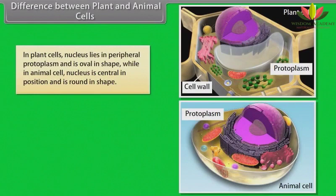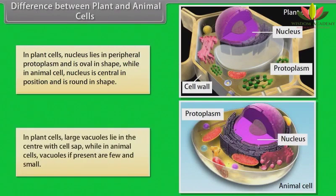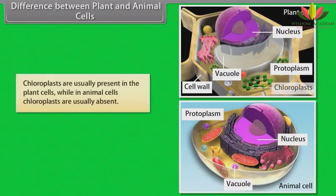In plant cells, the nucleus lies in the peripheral protoplasm and is oval in shape, while in animal cells the nucleus is central in position and is round in shape. In plant cells, large vacuoles lie in the center with cell sap, while in animal cells vacuoles, if present, are few and small. Chloroplasts are usually present in plant cells, while in animal cells chloroplasts are usually absent.